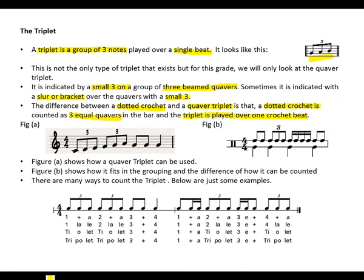If we look at figure A and figure B, it shows us exactly how the triplet is written out. Let's look at figure A. How many beats do we have in a bar? It's a 4-4 time, so we must have four beats. So the first triplet will be the first beat. The second triplet will be the second beat. And then we have two equal quavers, which will make up one beat. And then a crotchet, which makes one crotchet. So it's four beats in a bar.